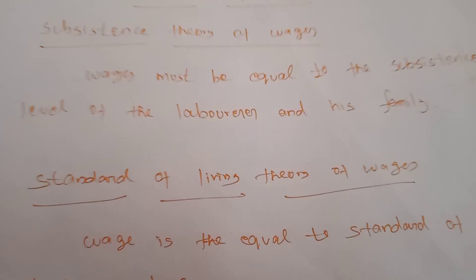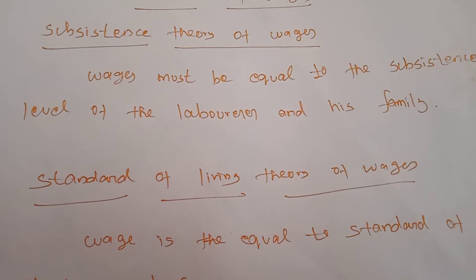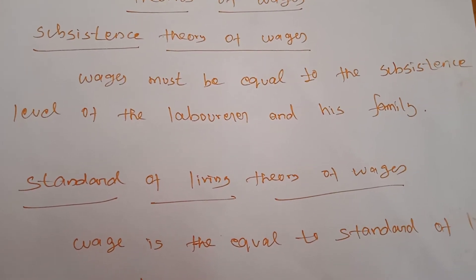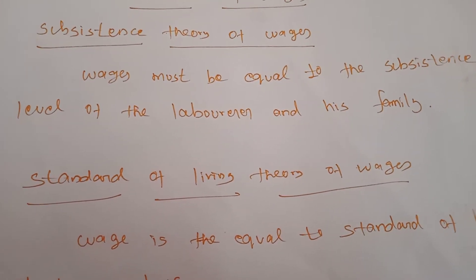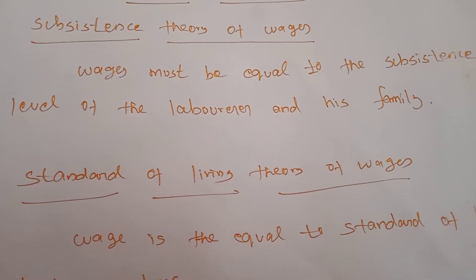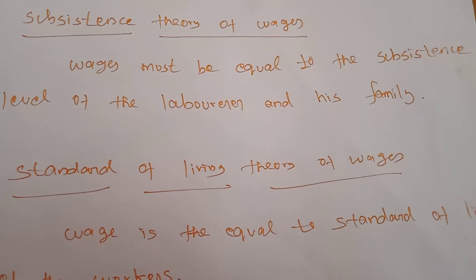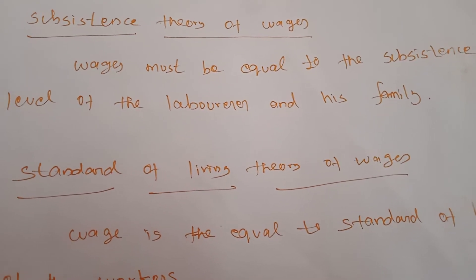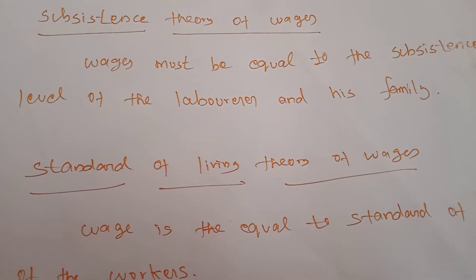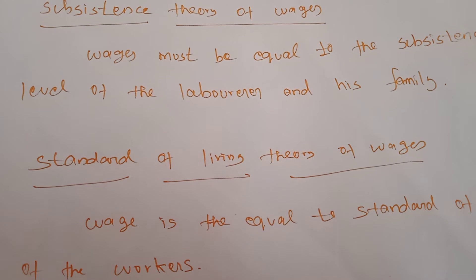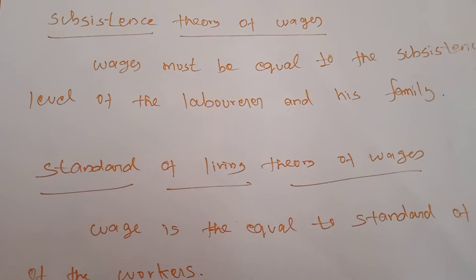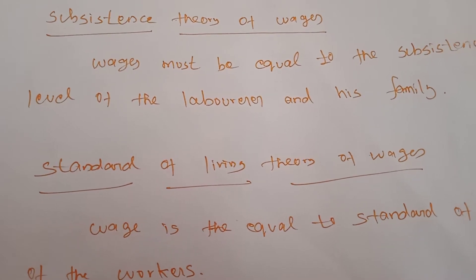Another criticism is that the assumption that population should increase with a rise in wages is not correct. In practice, most poor families have more children while some rich families have only one or two children. So the wage rate does not determine family size, and this theory fails to explain that correctly.